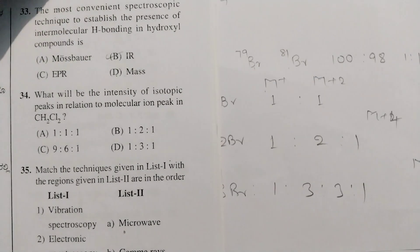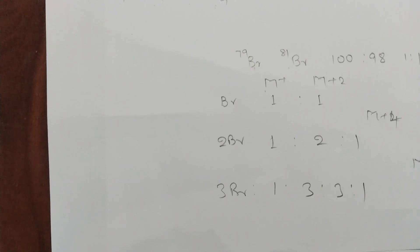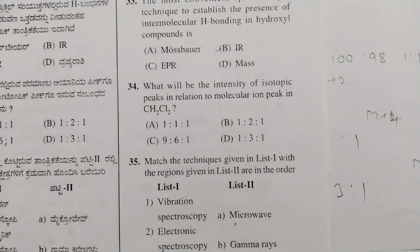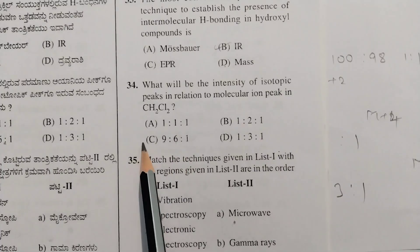This is very important to remember. For chlorine: one Cl → 3:1; two Cl → 9:6:1; three Cl → 9:9:1:(1/9). For bromine: one Br → 1:1; two Br → 1:2:1; three Br → 1:3:3:1. In this question, CH₂Cl₂ has two chlorine atoms, so the answer is 9:6:1. Option C is correct.